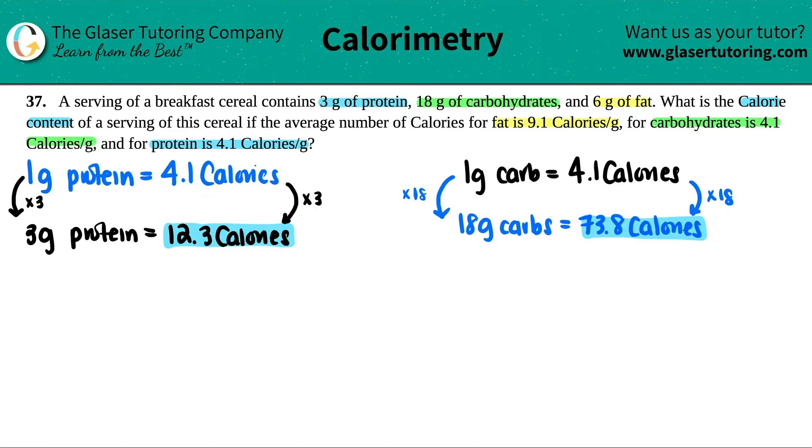One last macromolecule, the fats. Now, generally, the fats have a higher calorie content. For every one gram of fat that's ingested and metabolized, the body will be able to get out 9.1 calories to use for something. And in this case, in this breakfast cereal, there was six total grams. Caught it, guys.